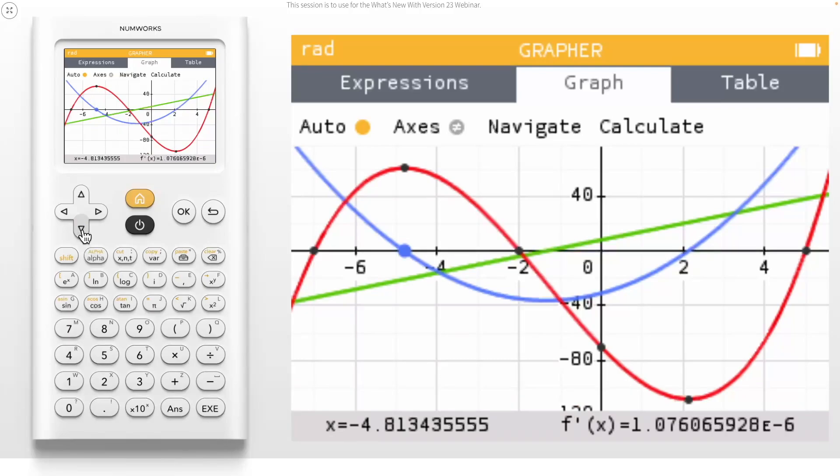For example, pressing down one time moves your tracer to indicate the 0 of the first derivative. This is a really powerful tool for calculus students to make connections between extreme values and 0s for critical values.